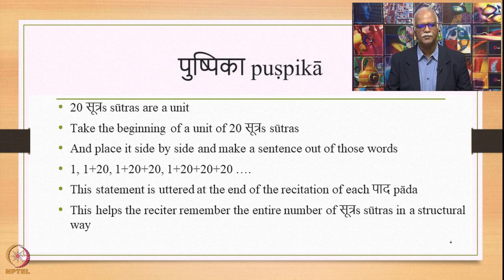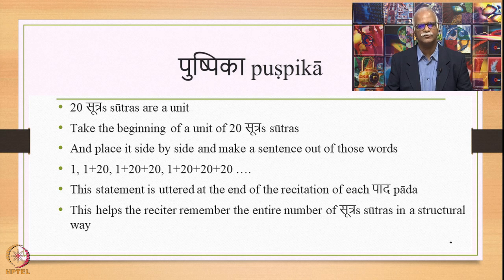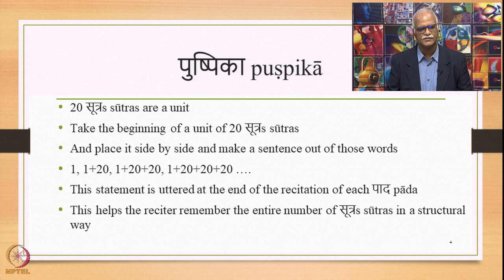For example, take the beginning of a unit of 20 Sutras. The first unit of 20 Sutras — take the beginning of it, then go to the next unit of 20 Sutras and take the beginning of this second unit of 20 Sutras. Do it recursively until you come to the end of the Sutras, and place all these beginnings of each unit of 20 Sutras side by side and make a sentence out of those beginning words or half words.